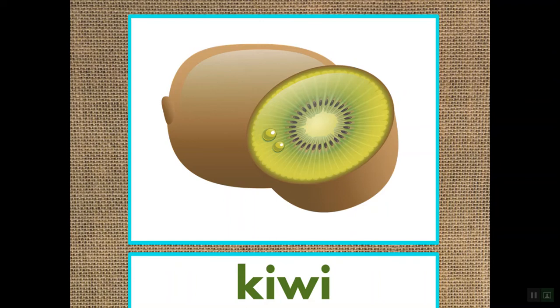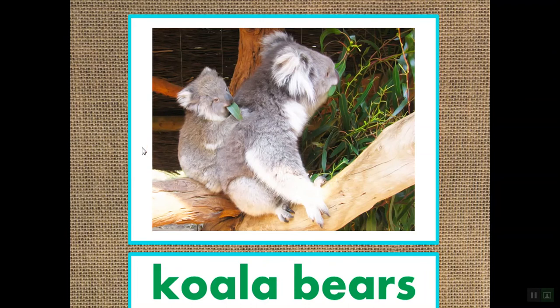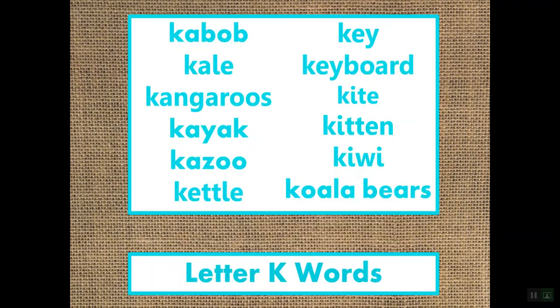Here's a fruit. This fruit is called kiwi. Say kiwi. Next, we have an animal, and this animal is a koala bear. Say koala bear. Here's our list of all 12 K words we just practiced. Let's go through and say them one more time: kebab, kale, kangaroos, kayak, kazoo, kettle, key, keyboard, kite, kitten, kiwi, koala bears.